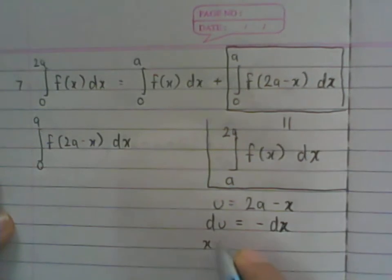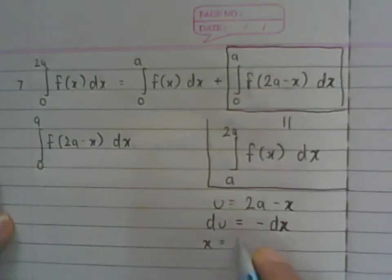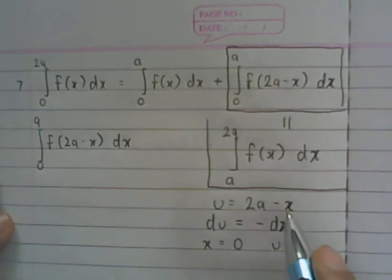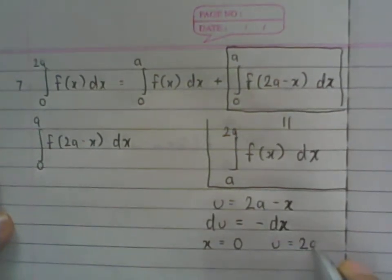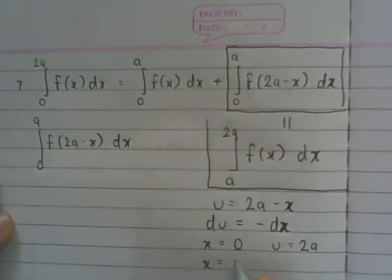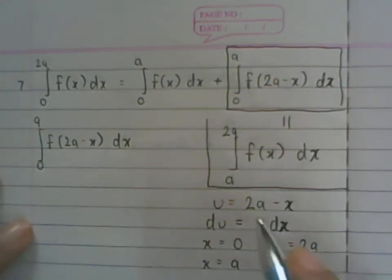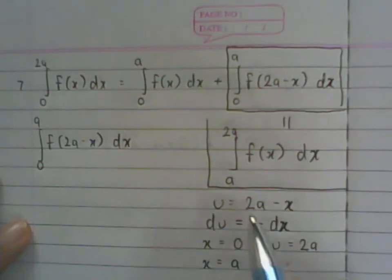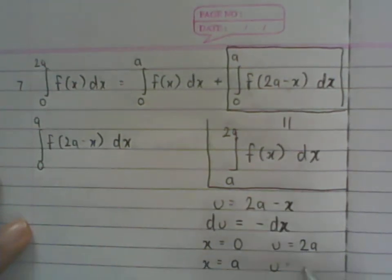When the lower limit x equals 0, u becomes 2a. The upper limit is when x equals a, so u becomes 2a minus a, which is the same as a.